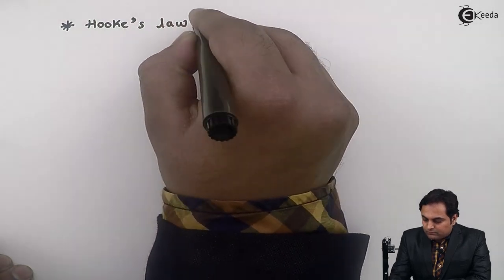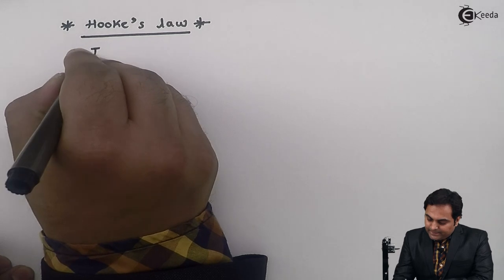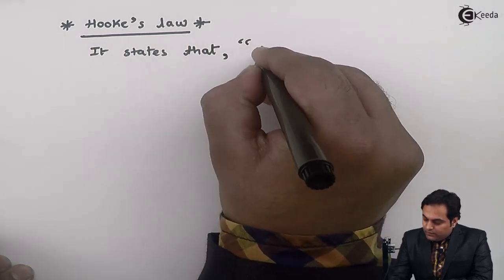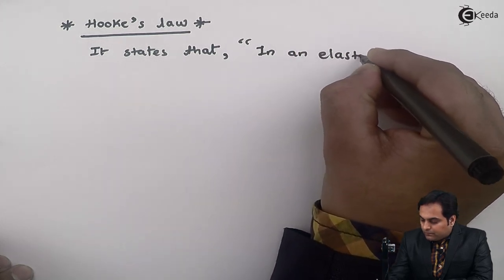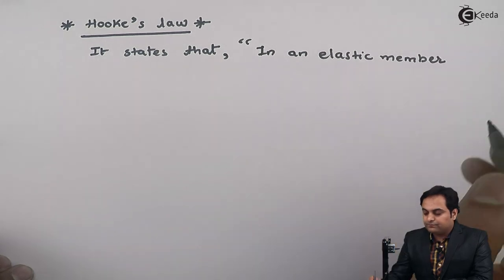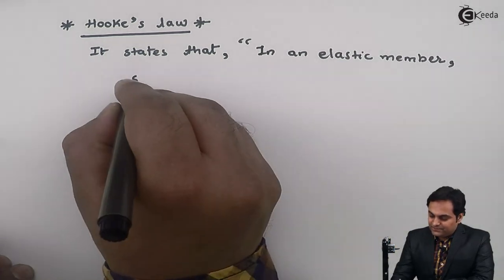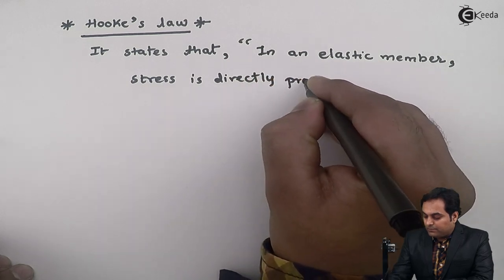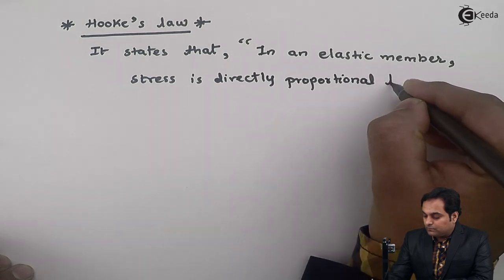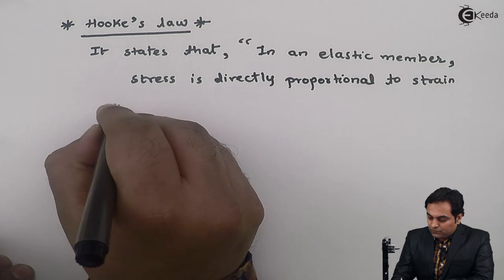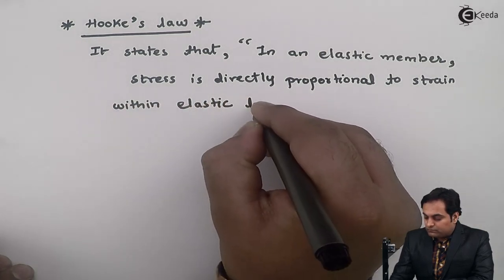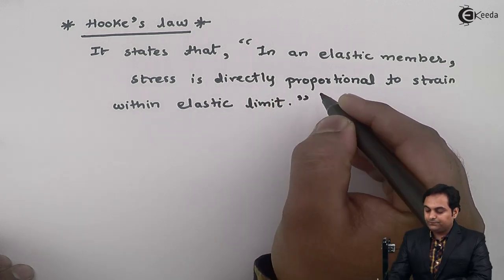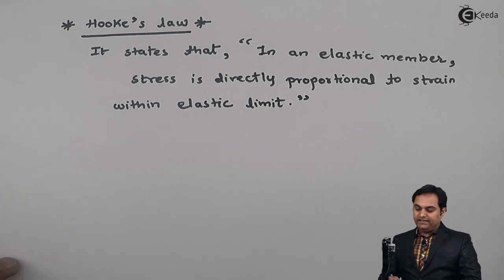Hello friends, in this video we are going to see what is meant by Hooke's Law. Hooke's Law states that in an elastic member, stress is directly proportional to strain within the elastic limit. Here is Hooke's Law, and I can explain it with the help of a diagram.